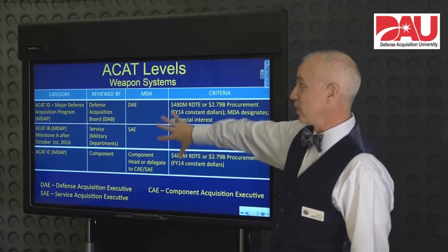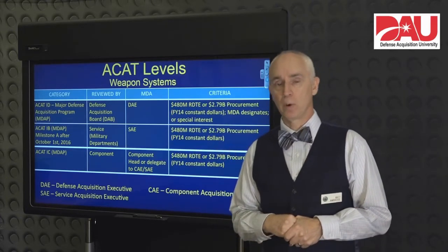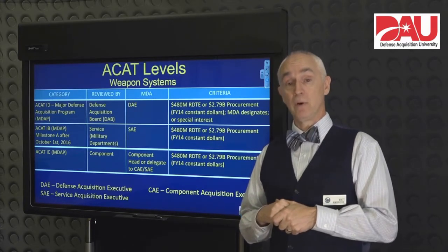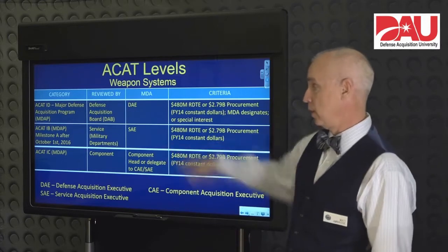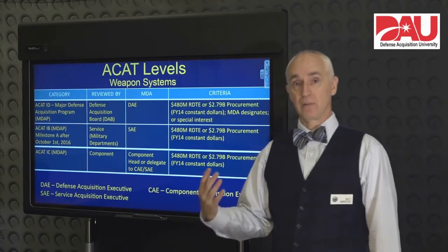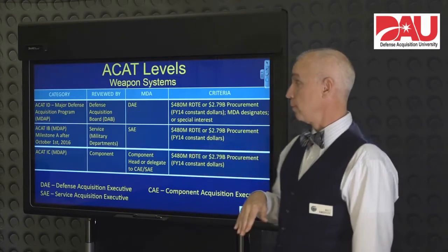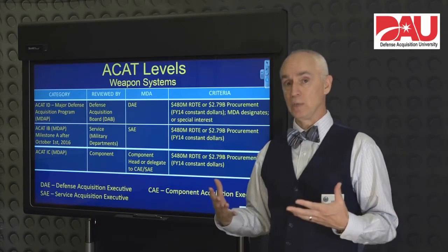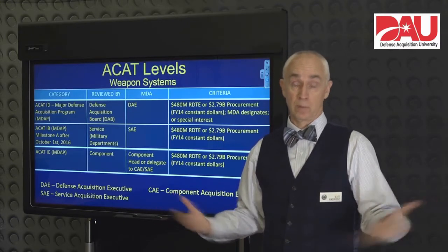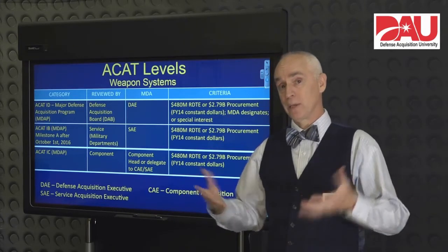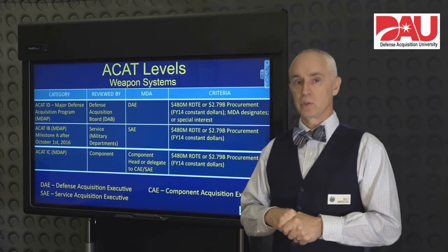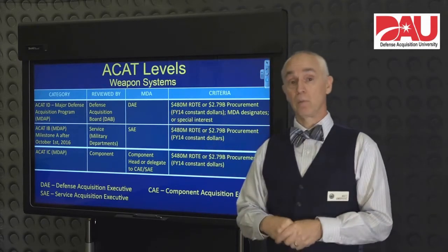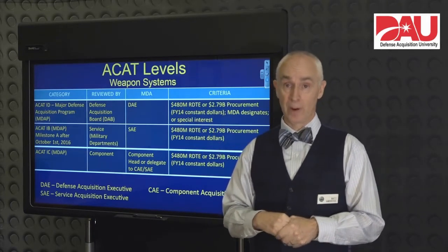There are also divisions within the ACAT 1 designation. The default position for any program with a Milestone A in October 2016 or after is going to be, by default, an ACAT 1B program. These are managed by the services at the service acquisition executive level for milestone decisions. However, there will be exceptions that need to be managed at the DOD level — exceptions defined in law, such as joint programs. For instance, a program like the Joint Strike Fighter would be managed at the DOD level so that all service interests are considered. That designation is ACAT 1D, where the defense acquisition executive is the milestone decision authority.